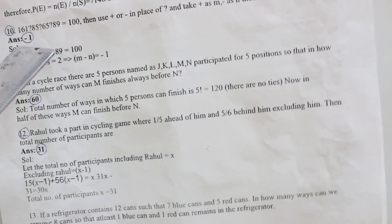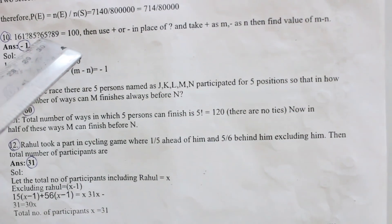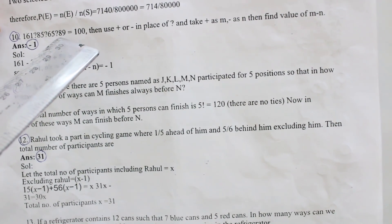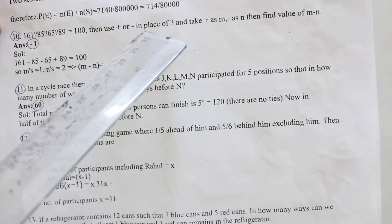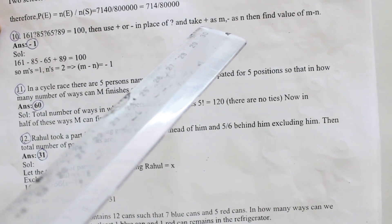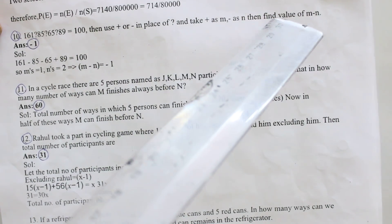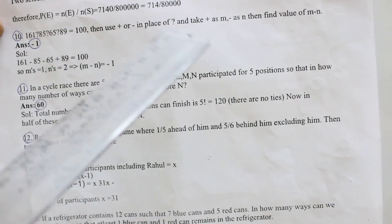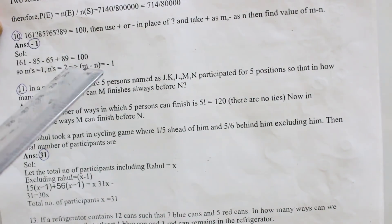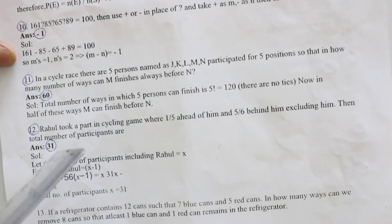Tenth question: 161 question mark 85 question mark 65 question mark 89 that equal to 100. Then use plus or minus in place of question mark and take plus as m minus as n, then find the value of m minus n. Instead of question mark you use the symbols plus minus but you get the answer is minus 1.